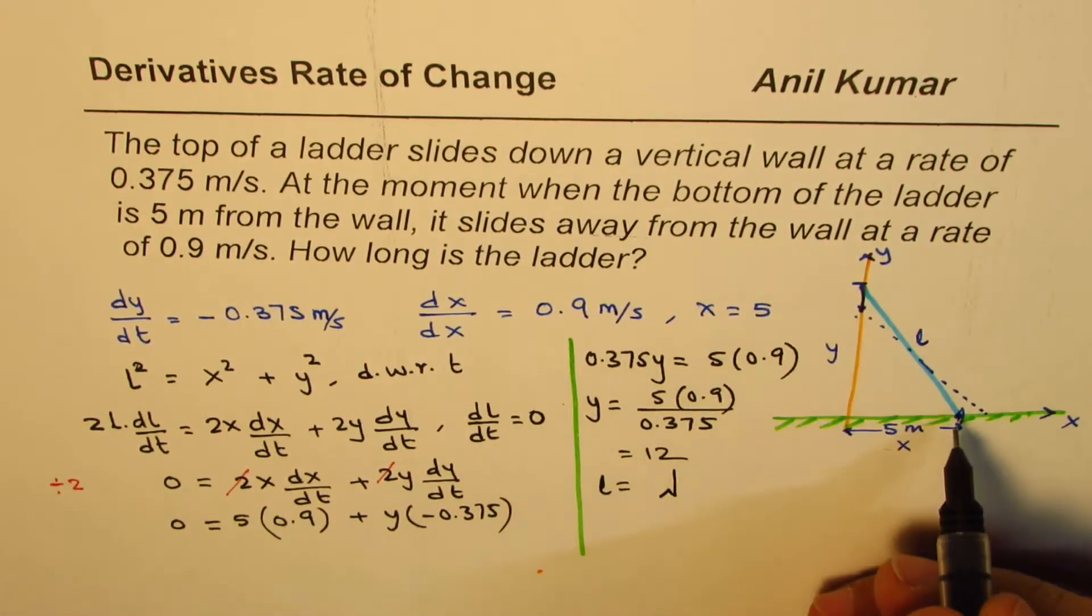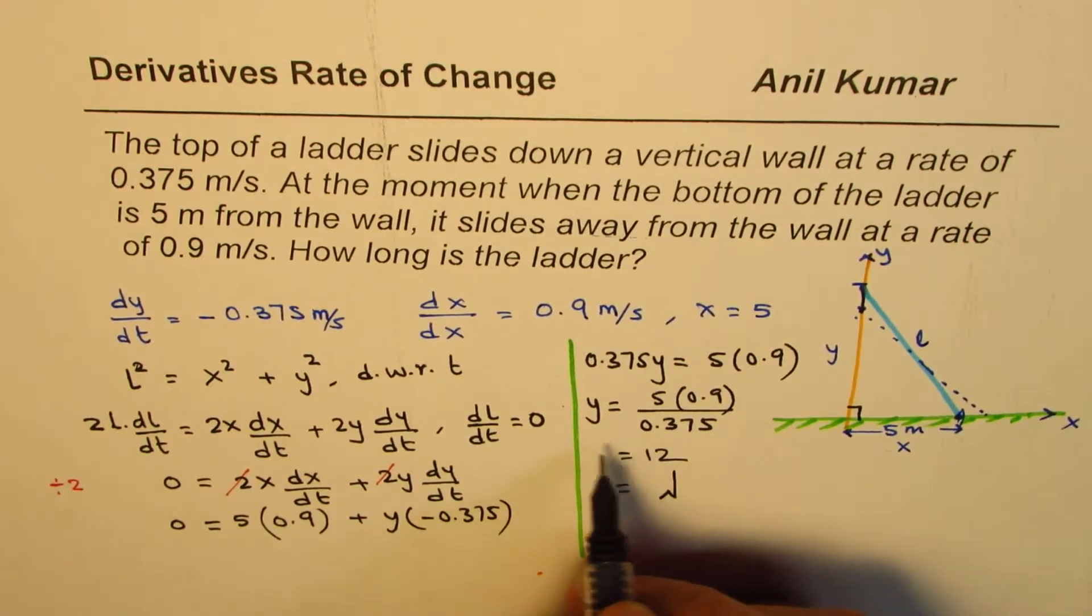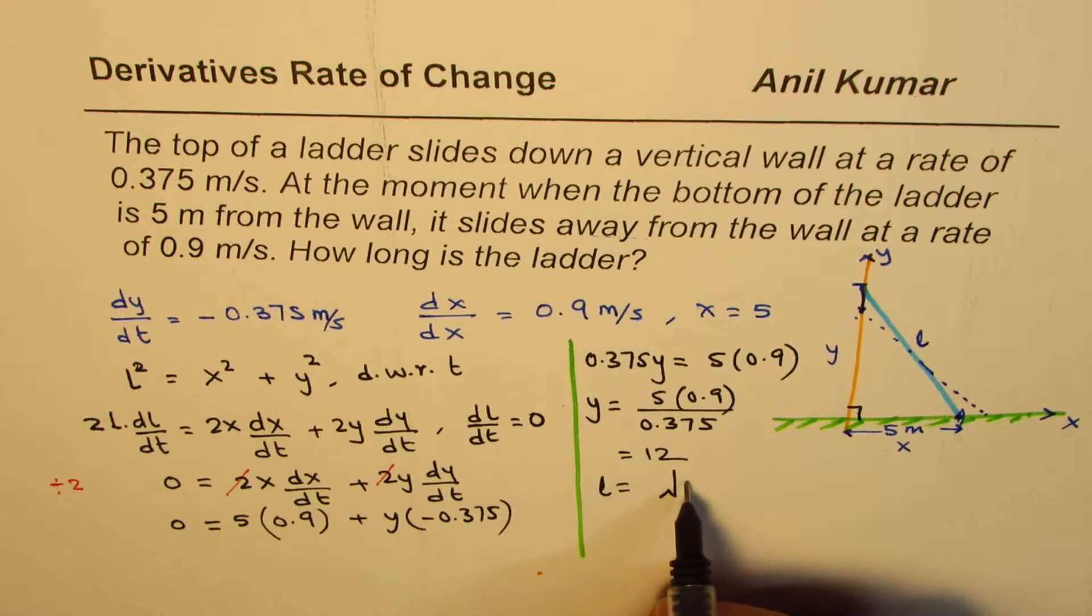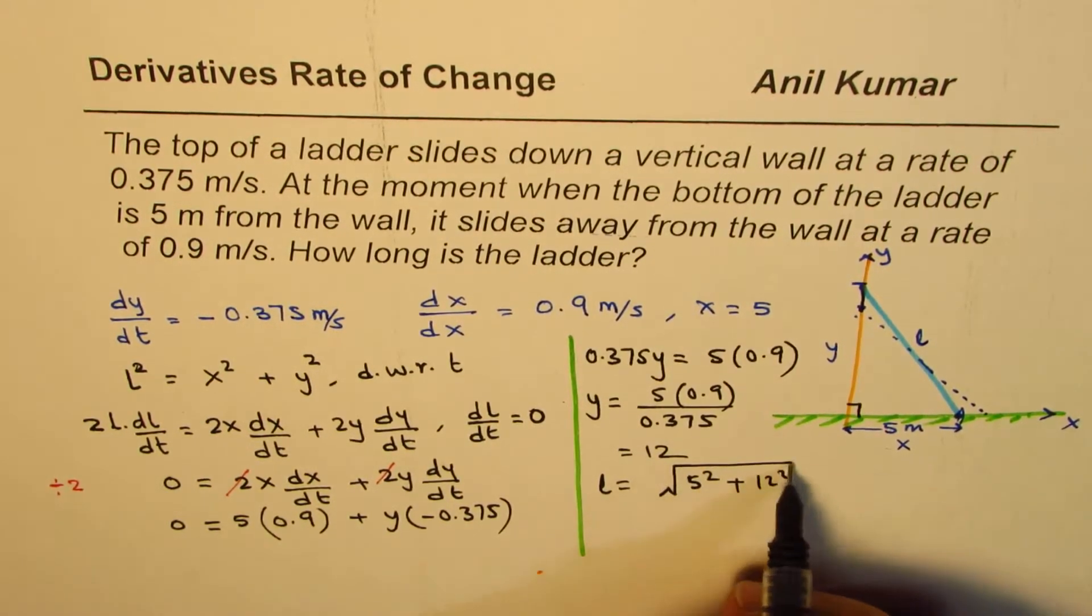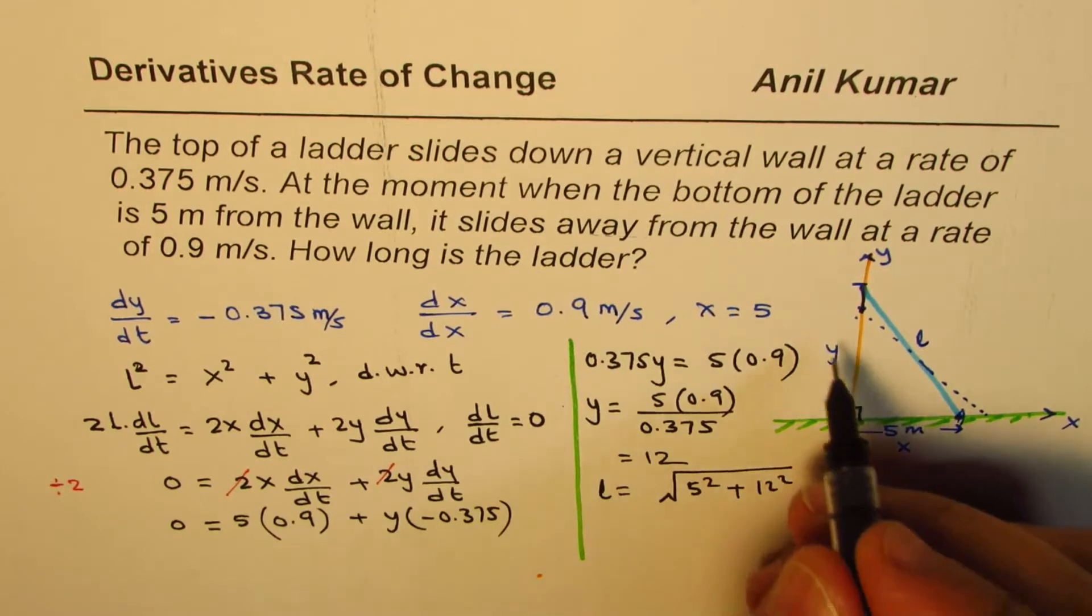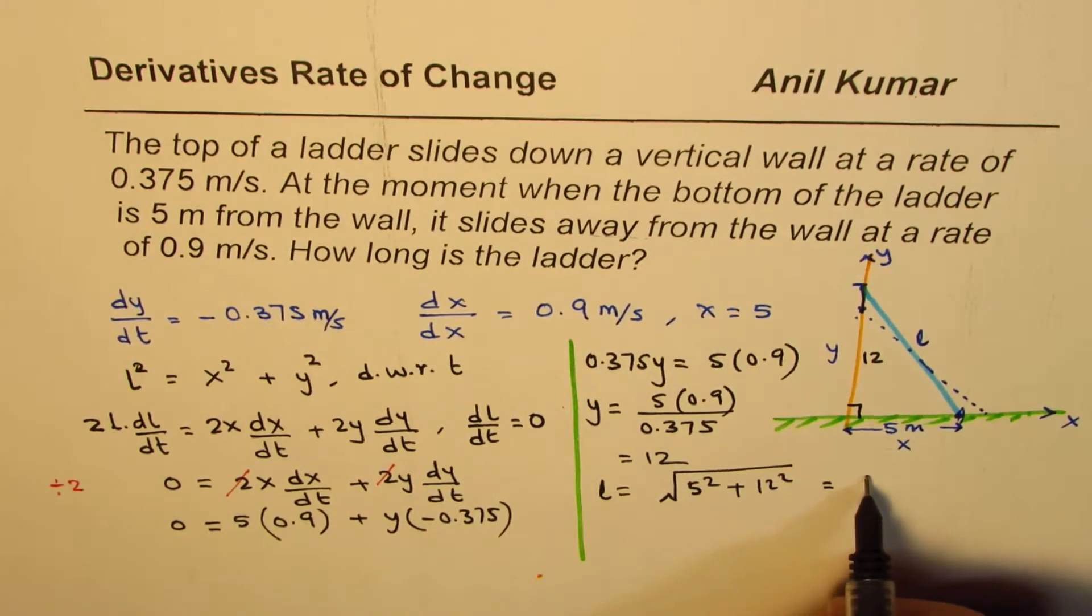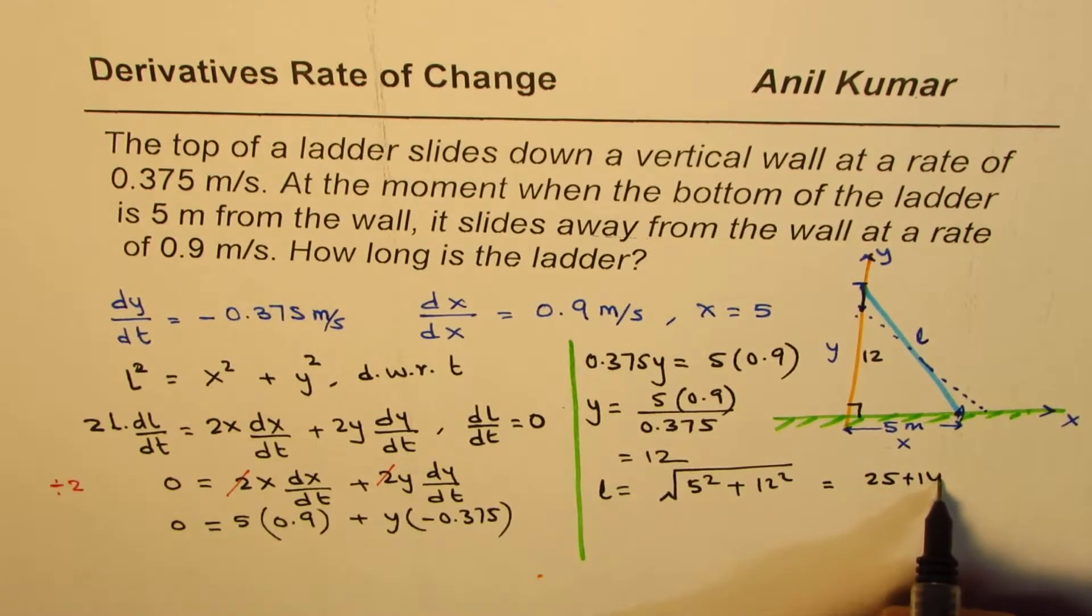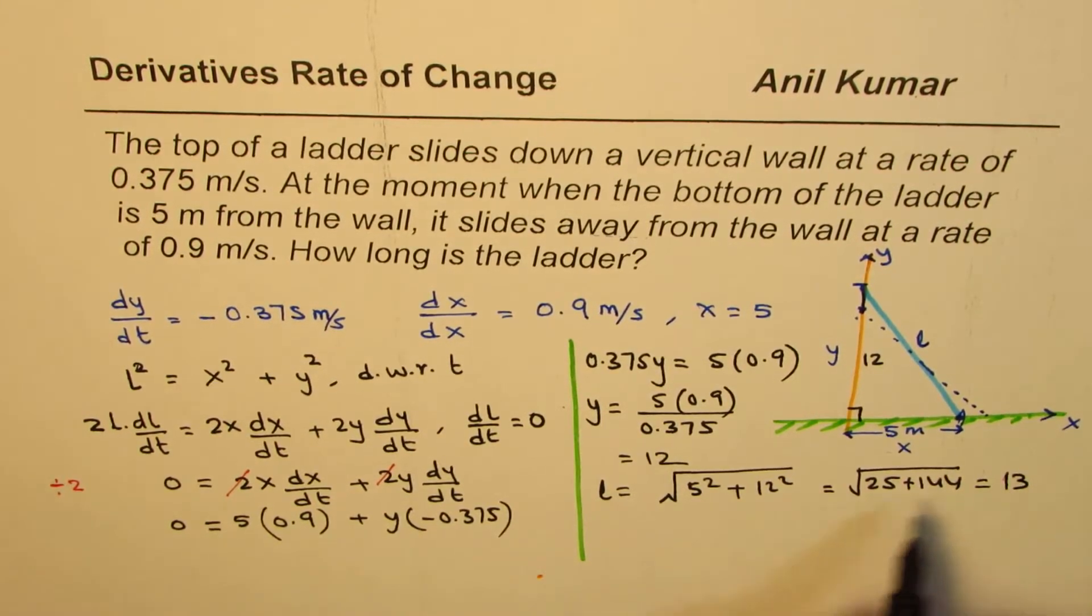Or we can say L equals square root of, since that's the hypotenuse, right, that's the right triangle, of x² which is 5² plus 12², square root, right? Is it okay? So this y was 12, so we are finding L now. So that equals 25 + 144, which is 169 square root.